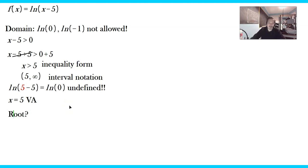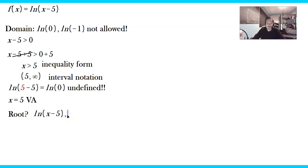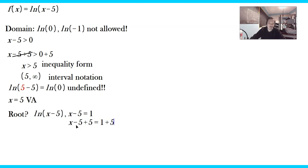What about the root? In other words, where do we cross the horizontal axis? That occurs when ln of x minus 5 equals 0, which means x minus 5 must equal 1. So x minus 5 plus 5 equals 1 plus 5, which means x equals 6. At x equals 6, that's the location of the root.